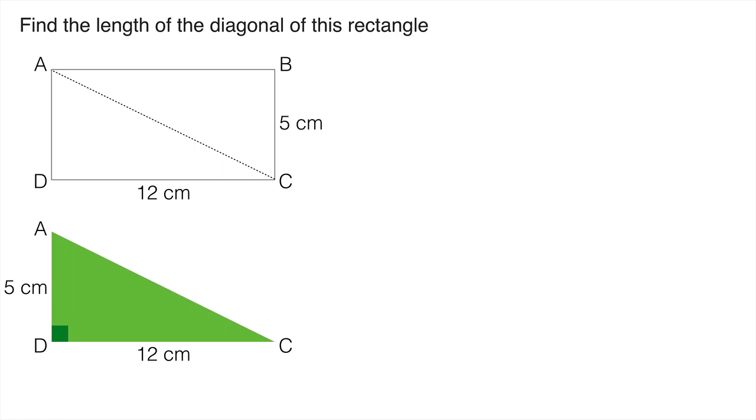Now the length I'm trying to find is length AC and that's the hypotenuse. I know by using Pythagoras that AC squared, the square in the hypotenuse, is equal to the sum of the squares on the other two sides. In other words, AD squared plus CD squared.